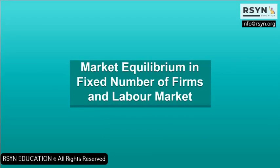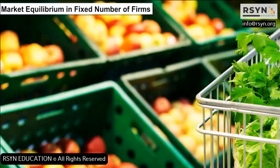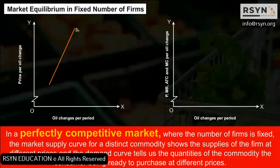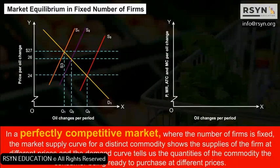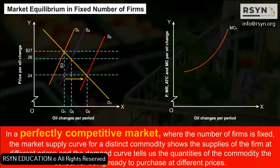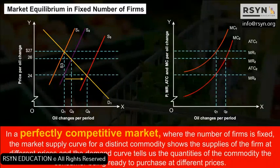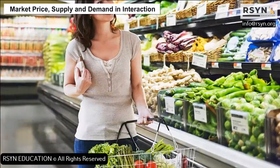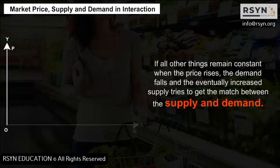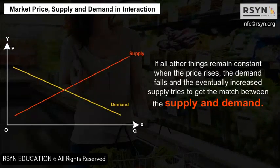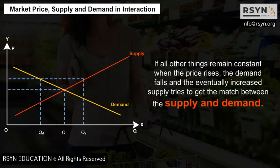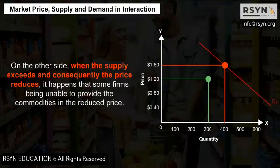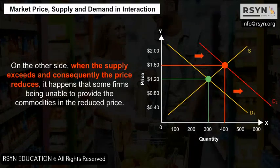Market Equilibrium with a Fixed Number of Firms: In a perfectly competitive market where the number of firms is fixed, the market supply curve shows the supplies of firms at different prices, and the demand curve tells us the quantities consumers are ready to purchase at different prices. If all other things remain constant, when the price rises, demand falls and the increased supply tries to match supply and demand. On the other side, when supply exceeds and the price reduces, some firms are unable to provide commodities at the reduced price.